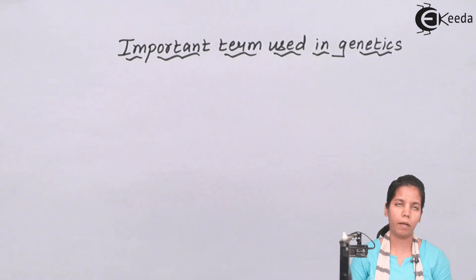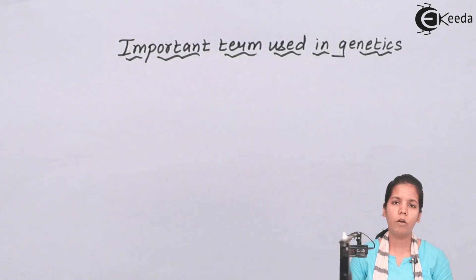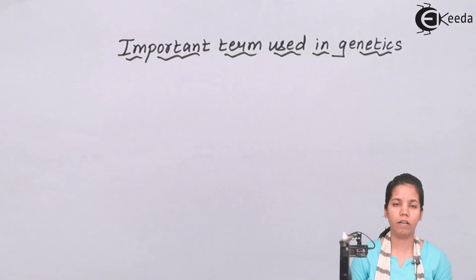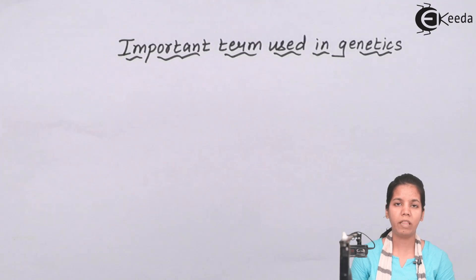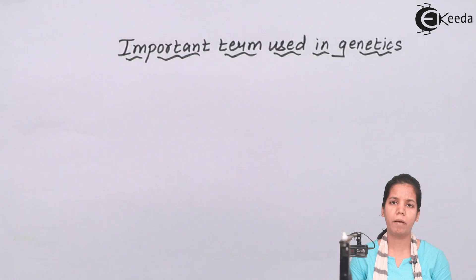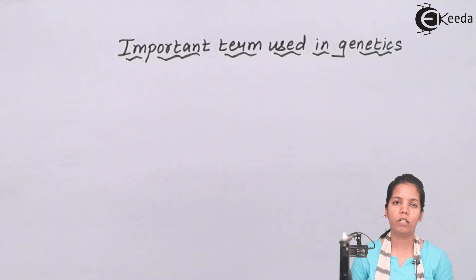Now let's talk about genotype. When I say genotype, it means the genetic makeup of an organism. Your genotype cannot be seen by the naked eye. Your genotype could have dominant alleles or recessive alleles. For example, I can see the genotype of a plant only through a microscope, not with the naked eye. If I notice a mango plant which is tall, I can say its phenotype is tall just by looking at it, but the genotype — capital T, capital T — can only be determined microscopically.